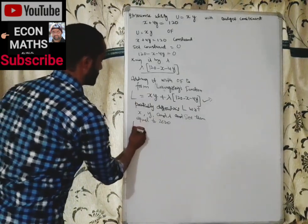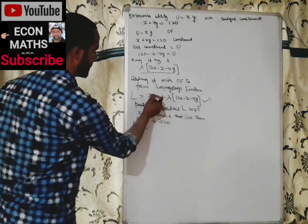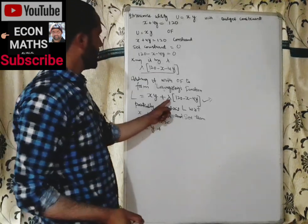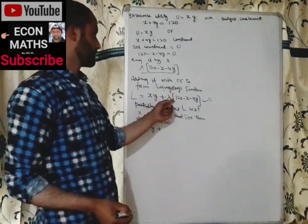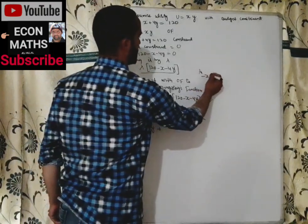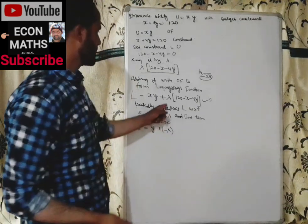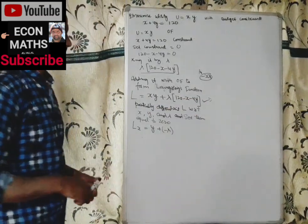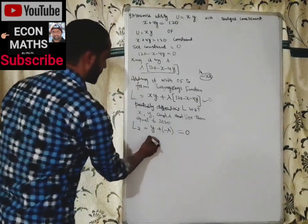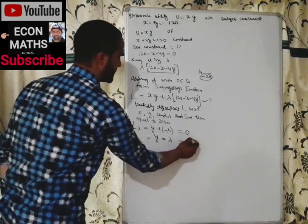Partially differentiating L with respect to x: the derivative of x·y with respect to x is y; the derivative of λ·120 with respect to x is 0; the derivative of −λx is −λ; and the derivative of −4λy with respect to x is 0. So L_x = y − λ = 0, which gives Equation 1: y = λ.